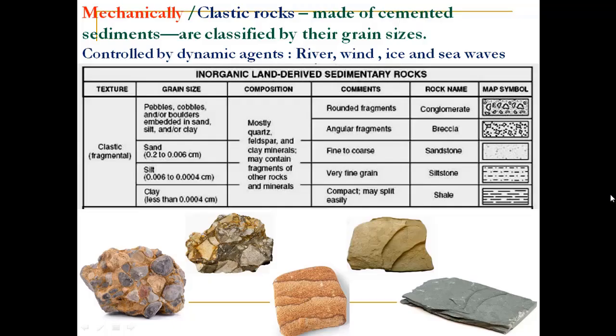Now we will understand the three ways by which sedimentary rocks are formed. First, mechanically formed sedimentary rock. In this, large fragments of rock are visible — these are called clasts. Made up of cemented sediments, these rocks are classified by their grain sizes. They are mainly controlled by dynamic agents like river, wind, ice, and sea waves.